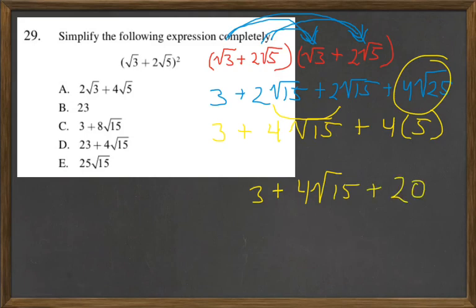Is there anything else that can be combined? Yes. We have the 3 here and the 20 over here. So that makes 23 plus 4 square root of 15 which is D.